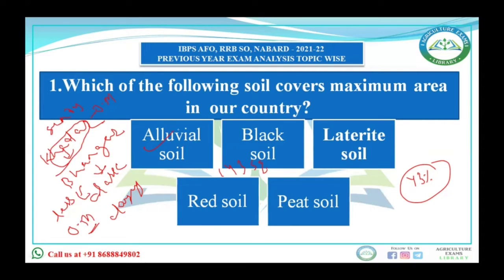Next is black soil. About 15 percent of the soil in our country is black soil. It is also known as Regur soil and is the best for cultivation of cotton. It is also known as mature soil or late soil. It has high water-retaining capacity and shrink-swell potential. Self-plugging is one of the characteristics of black soil.